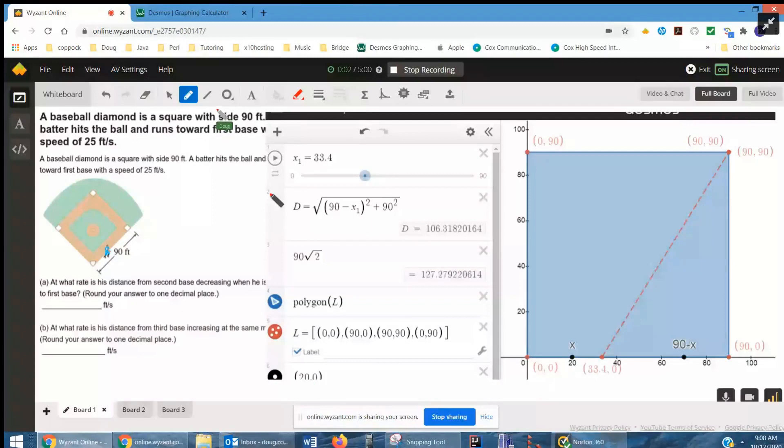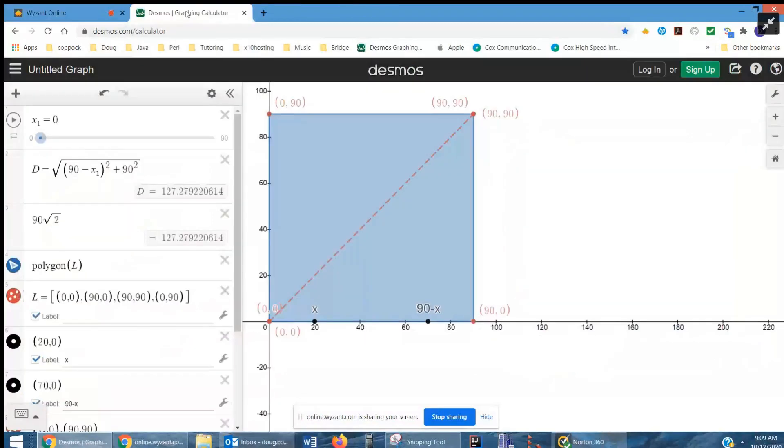Okay, let's take a quick look at what's actually happening here. I'm going to go to Desmos and show you that we've got this baseball diamond that's 90 feet, a 90 foot square on a side.